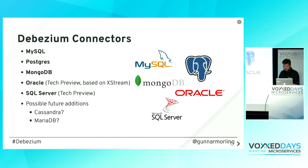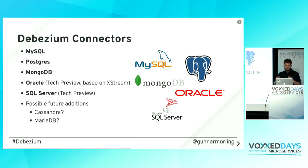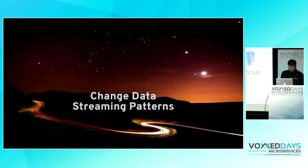Debezium is a set of connectors for Kafka Connect. Currently we have stable connectors for MySQL, Postgres, and MongoDB — used in production at multiple companies. We recently started work on connectors for Oracle and SQL Server, currently in tech preview. We may add more based on community feedback — Cassandra comes up quite often.